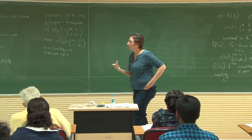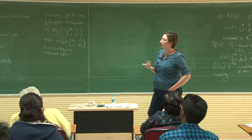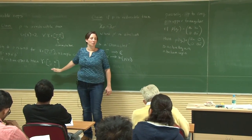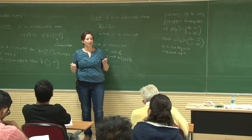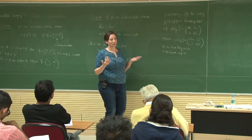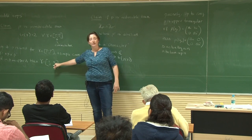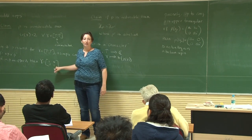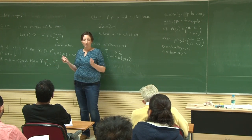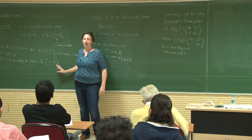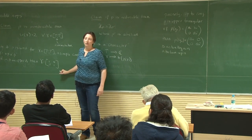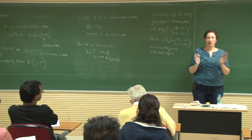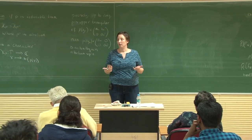One more interesting fact about the reducible representations: because the commutator has trace 2, if I have a reducible representation I can assume it's upper triangular and the commutator subgroup is in the Borel subgroup. If you multiply any two upper triangular matrices with 1's on the diagonal, they commute. So any reducible representation necessarily has an abelian commutator — and there's a name for groups like that: they're called metabelian.